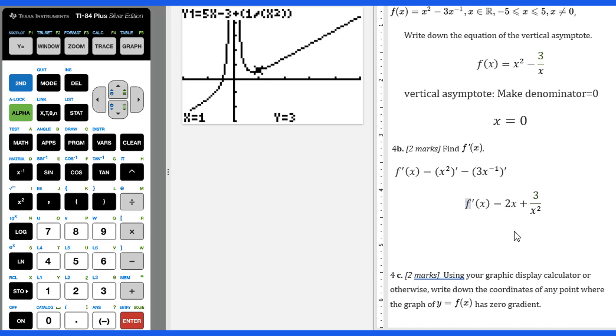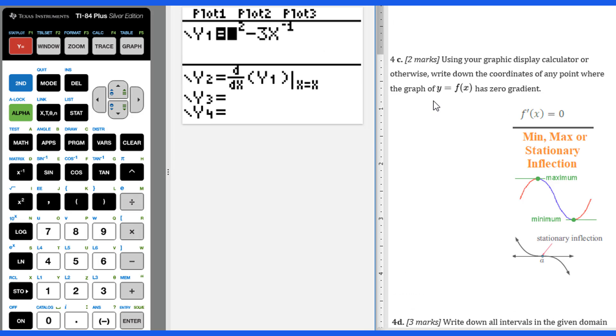For 4c, using graphing calculator or otherwise, write down the coordinates of any points where the graph of y equals f(x) has a zero gradient. So we put this f(x) into y1.